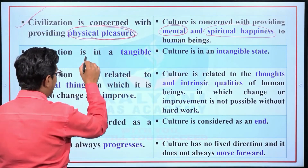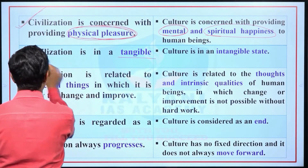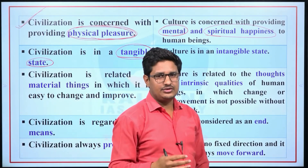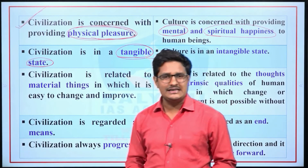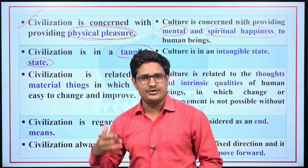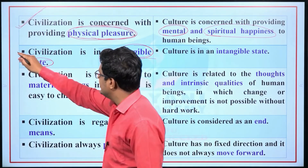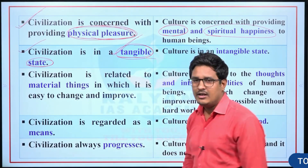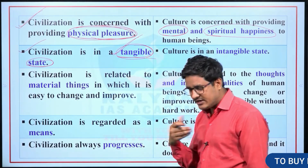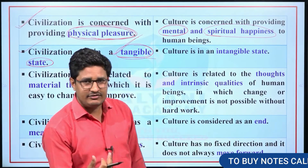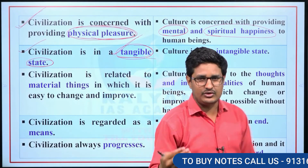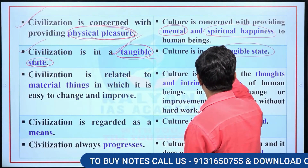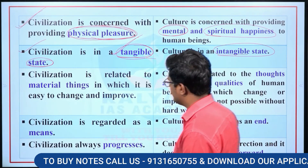Sixth difference: civilization is in a tangible state. All material things which can be seen and touched by human beings are included in civilization, so civilization is tangible. But culture includes non-material things such as philosophy, ideology, and religion, so culture is in an intangible state.